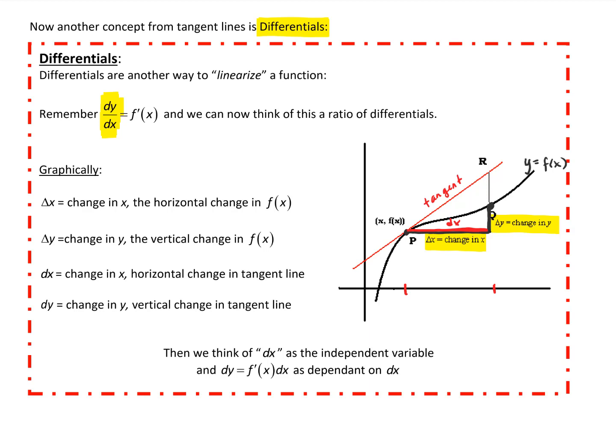Now, dy is the change in y — the vertical change on the tangent line. That is not the same as delta y. dy is the vertical change on the tangent line as we move from one point to another. So in terms of our linearization, when we use a tangent line to approximate a curve, the closer we are to the actual point where we drew the tangent line — closer to p — the better the approximation.